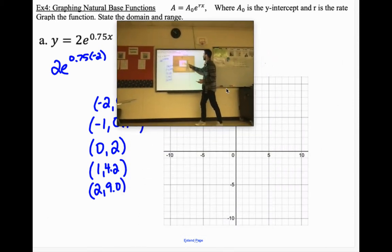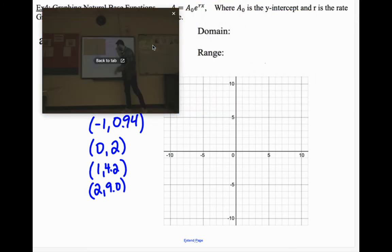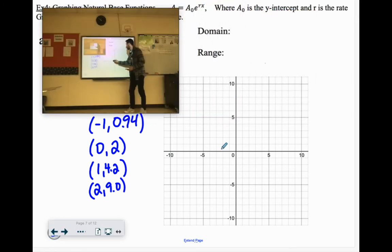So if we were to graph these, negative 2, 0.45. There-ish, we have negative 1, 0.94. We have 0, 2, 1, 4.2. Whoops, that's up there. And then 2 and 9, it's about there.